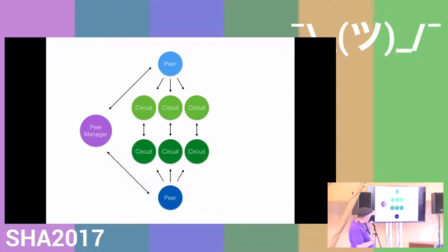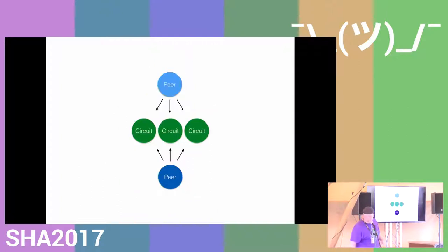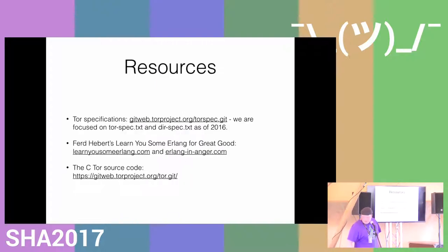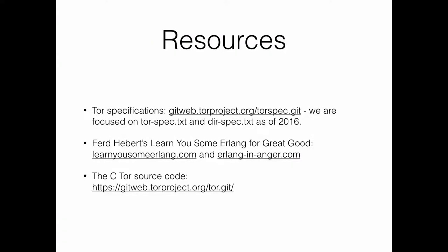Right now we have one circuit process represented for each peer, which is redundant because they have the same state. So we're moving toward a design where circuits are mutually owned by the two processes. There are some resources to look at: the Tor spec and directory spec are both required reading. There are good Erlang resources if you want to get introduced to Erlang, and of course the C Tor code, which is easy to dive into to understand what's going on and extract test cases when building things.